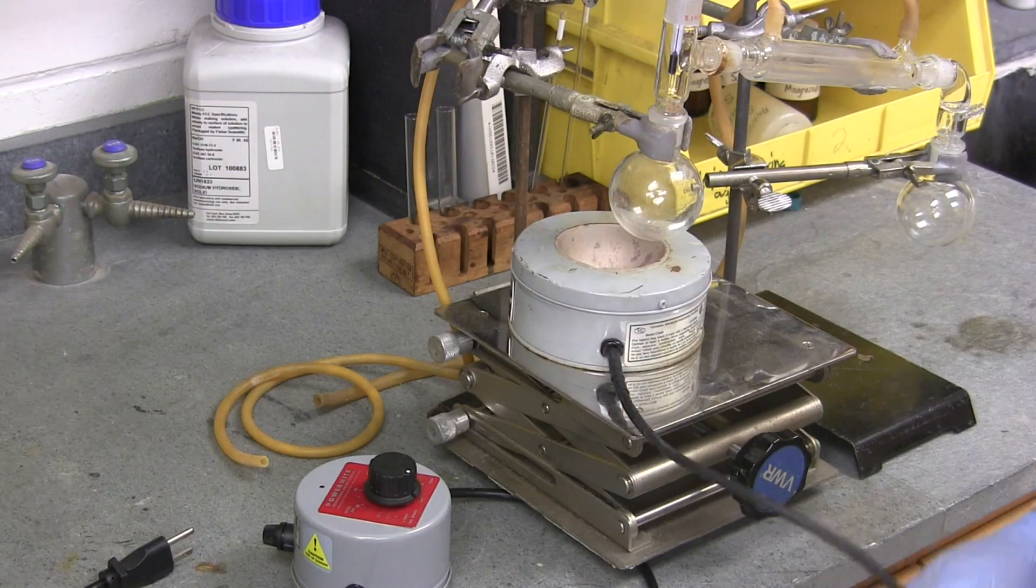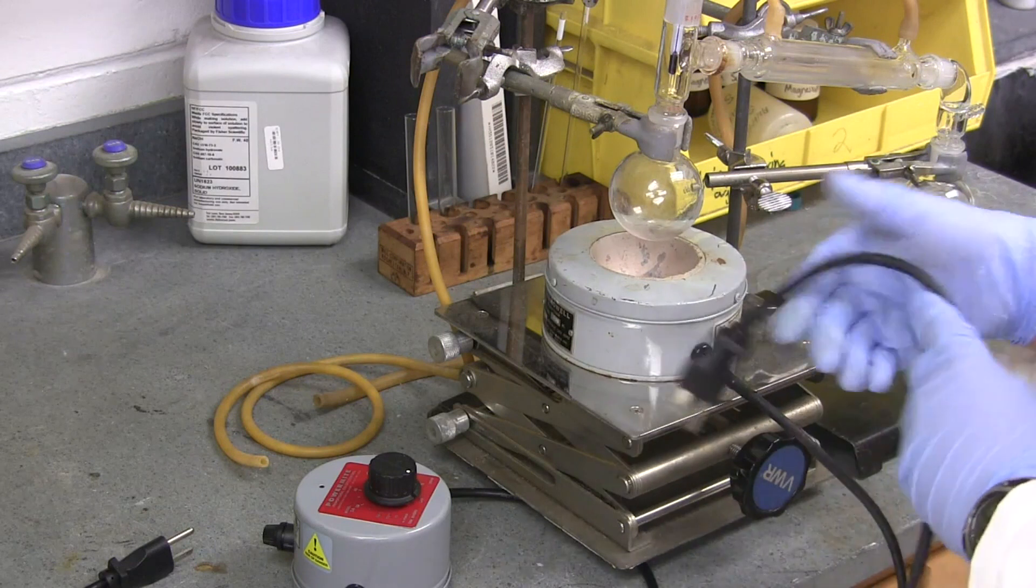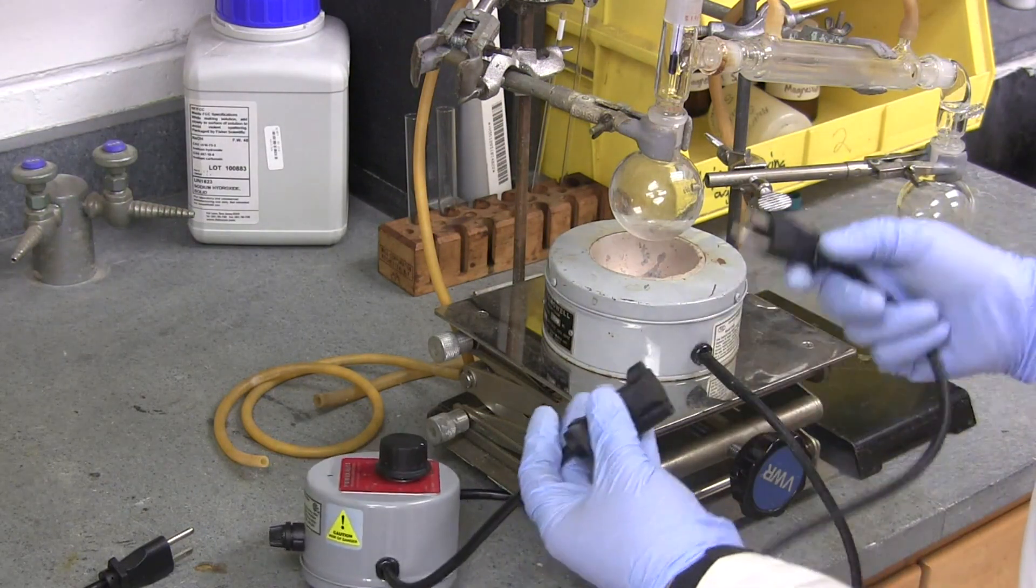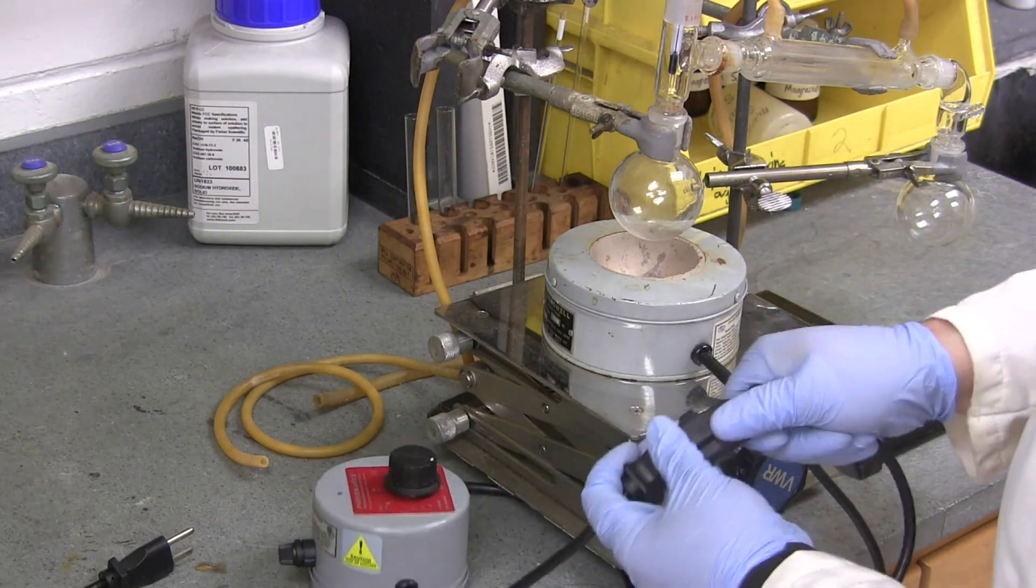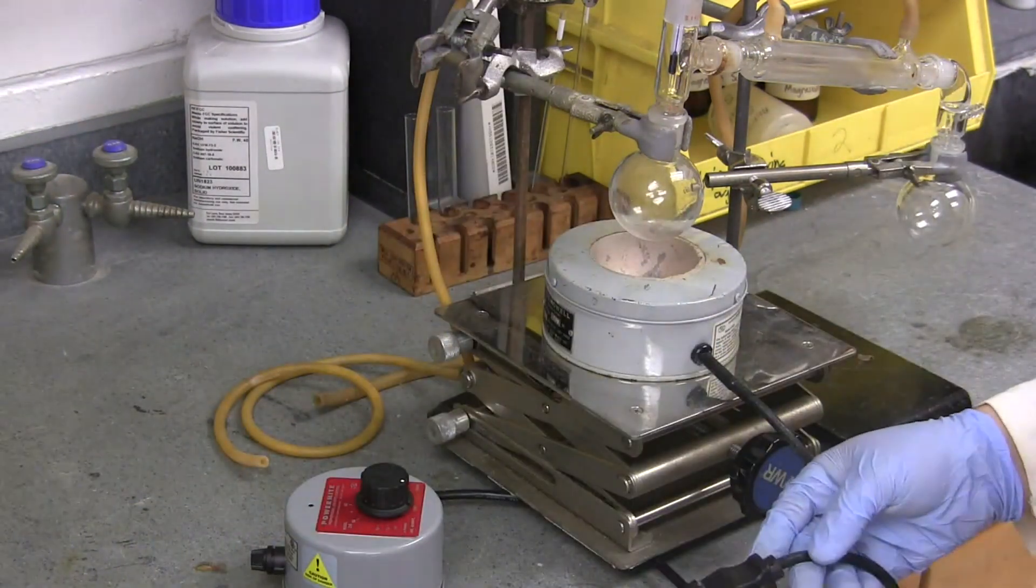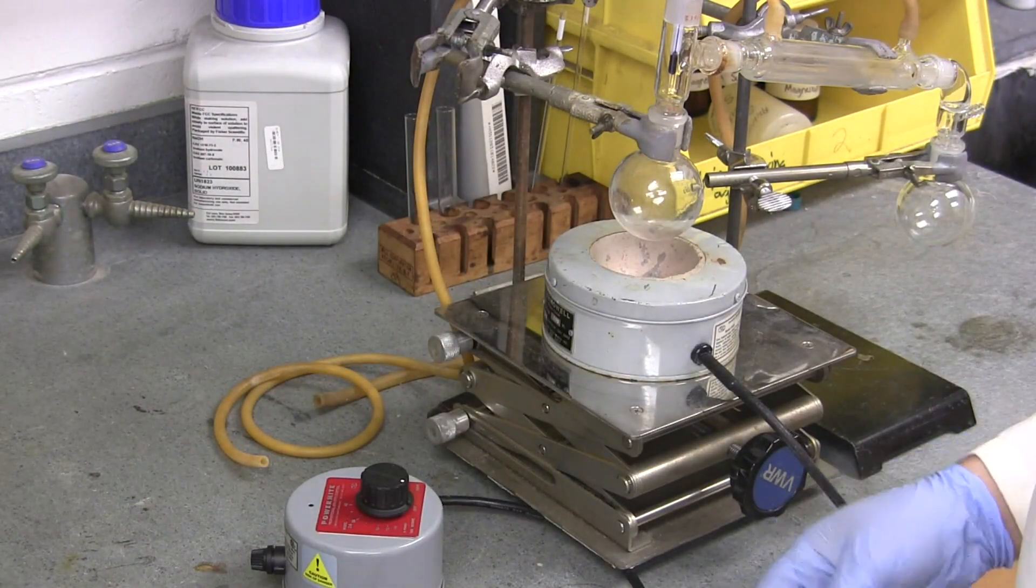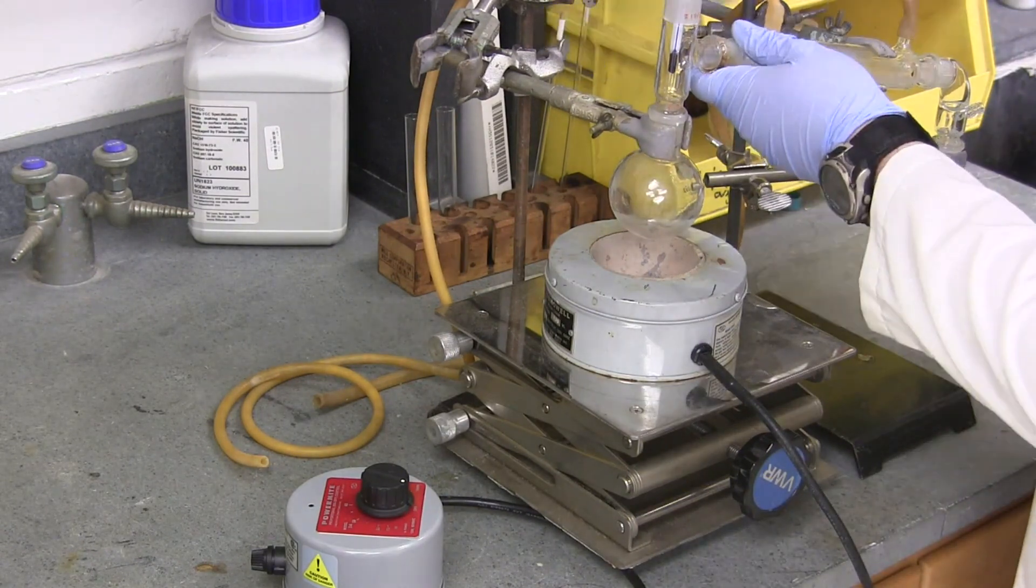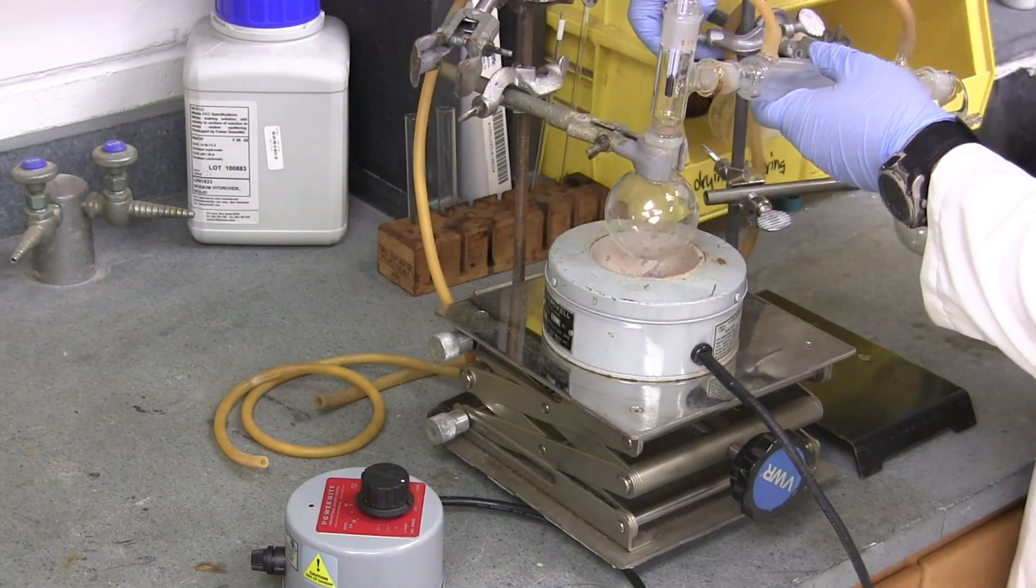For either setup, a heating mantle is used to heat the distilling flask. Simply attach the heating mantle to the dial and the dial to the outlet. The distilling flask is lowered into the heating mantle, and the distillation can begin.